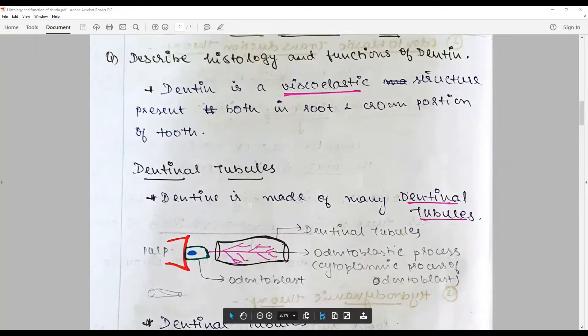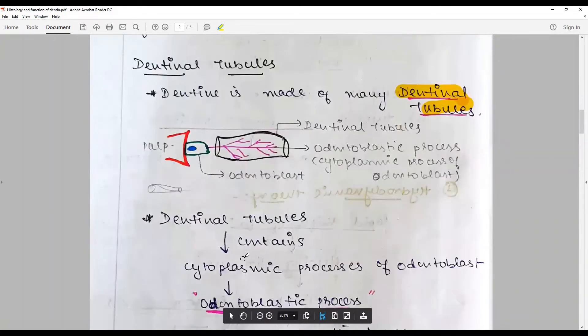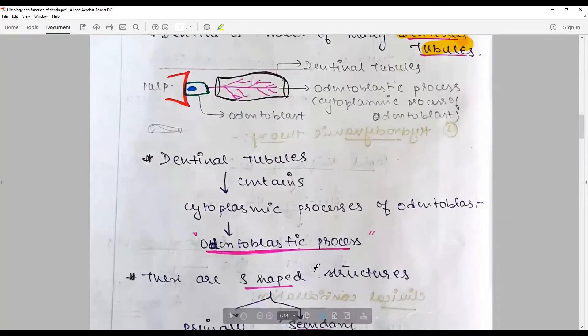We have to say it's made up of many dentinal tubules which are very essential. Draw a small representative diagram showing the pulp, odontoblast, the nucleus, odontoblastic process - the cytoplasmic extension of the odontoblast within the dentinal tubule. The dentinal tubule contains cytoplasmic process called the odontoblastic process.